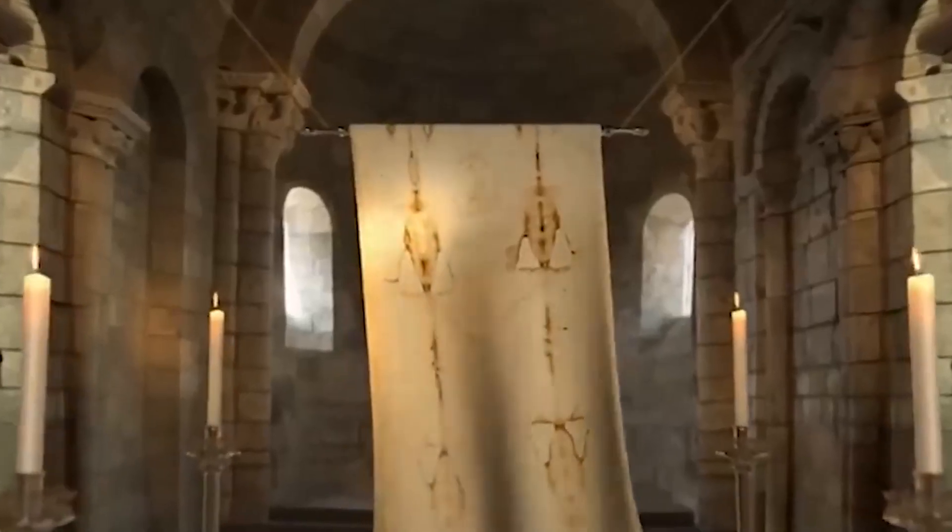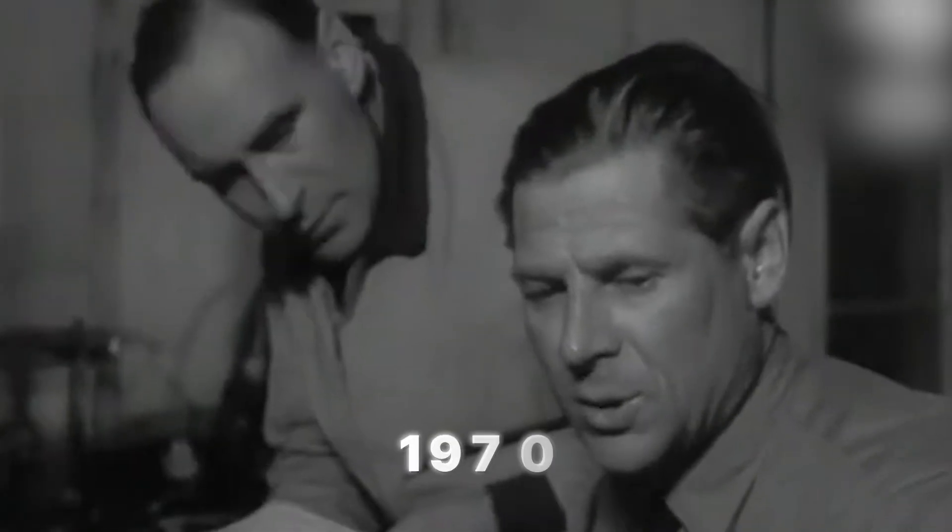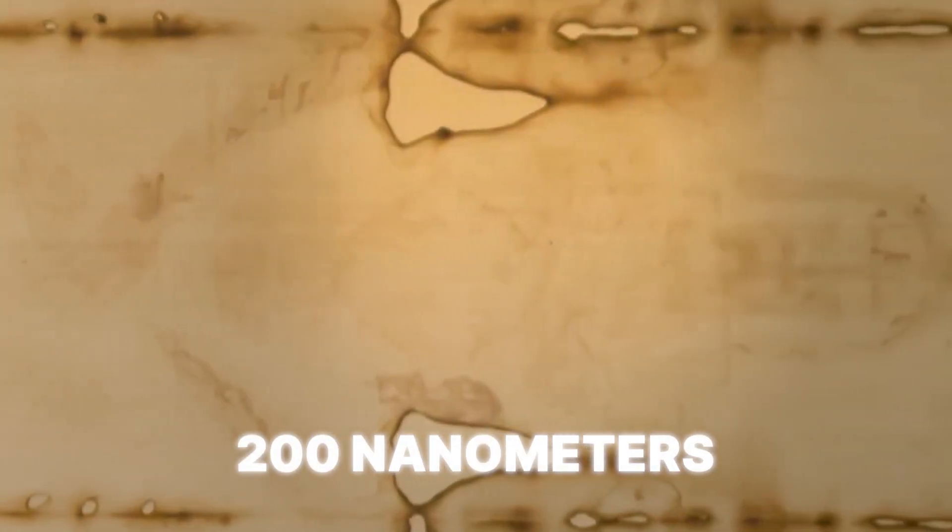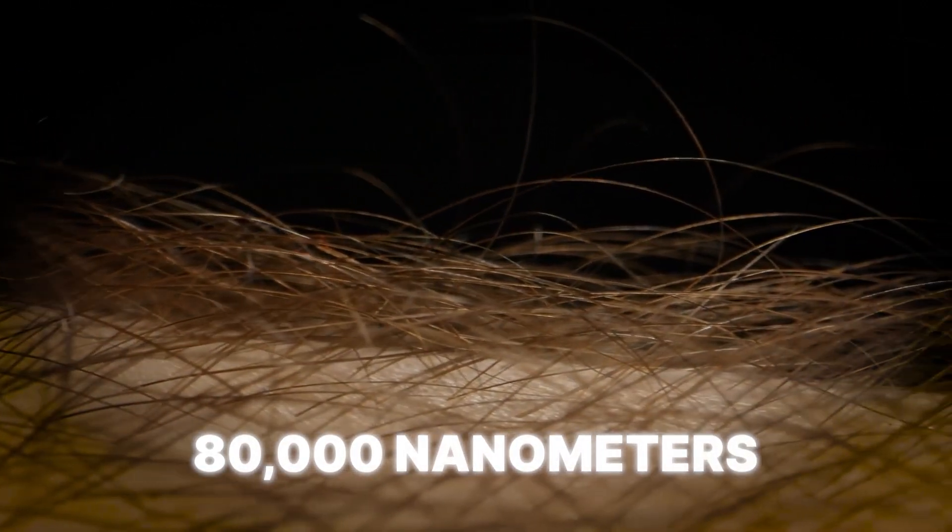This meant the image on the cloth itself was a perfect photographic negative, centuries before photography was even a dream. Then it gets weirder. Scientists in the 1970s, part of the Shroud of Turin Research Project, or STURP, discovered that the image is unbelievably superficial.